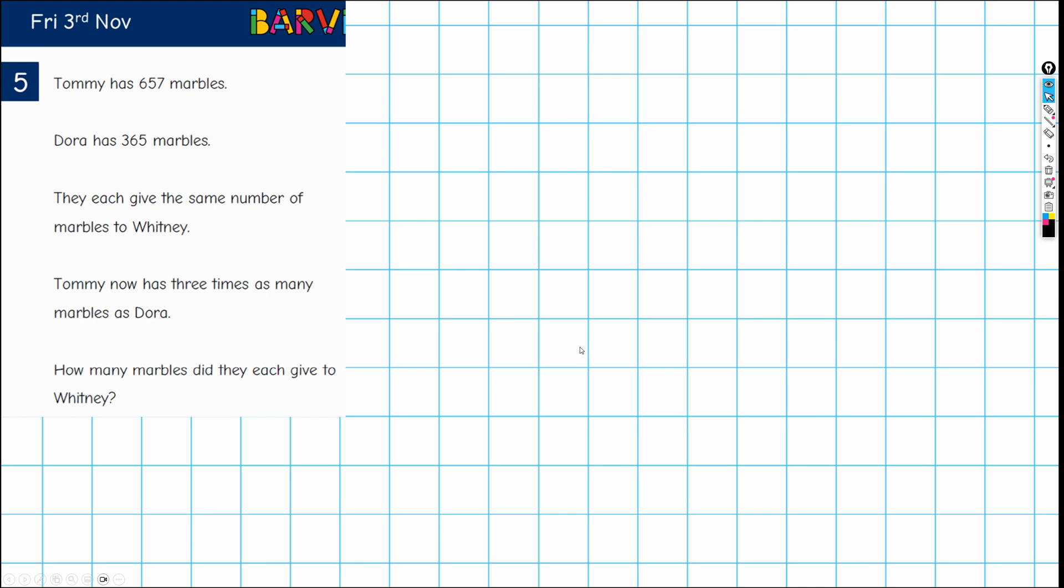Okay, so here's a level five bar model problem. Tommy has 657 marbles, Dora has 365 marbles, they each give the same number of marbles to Whitney. Tommy now has three times as many marbles as Dora, and we're asked how many marbles did they each give to Whitney?